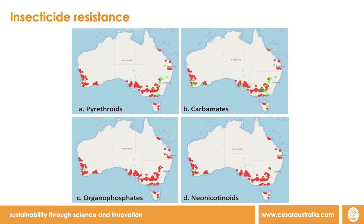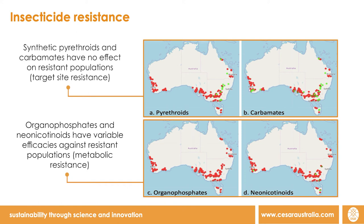The maps you can see here show the results of GPA resistance testing in 2018. The red dots represent resistant populations and the greens are susceptible populations. As you can see, most populations demonstrate resistance to pyrethroids, carbamates, organophosphates and neonicotinoids.